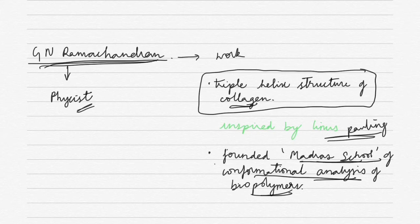So what is the triple helix structure of collagen? When you read about proteins in biomolecules, you will read that protein has primary structure, secondary structure, tertiary structure and quaternary structure.